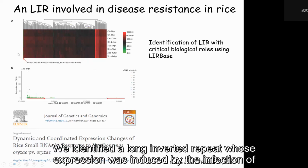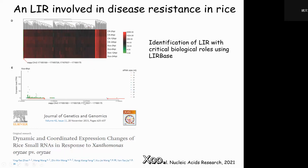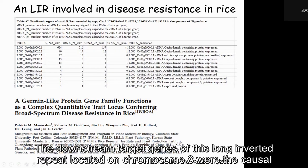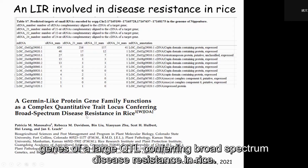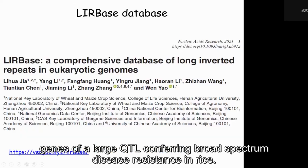We identified a non-invalid repeat whose expression was induced by the infection of XOO. The downstream target gene of this non-invalid repeat, located on chromosome 8, was the causal gene of a large locus conferring broad-spectrum disease resistance in rice.